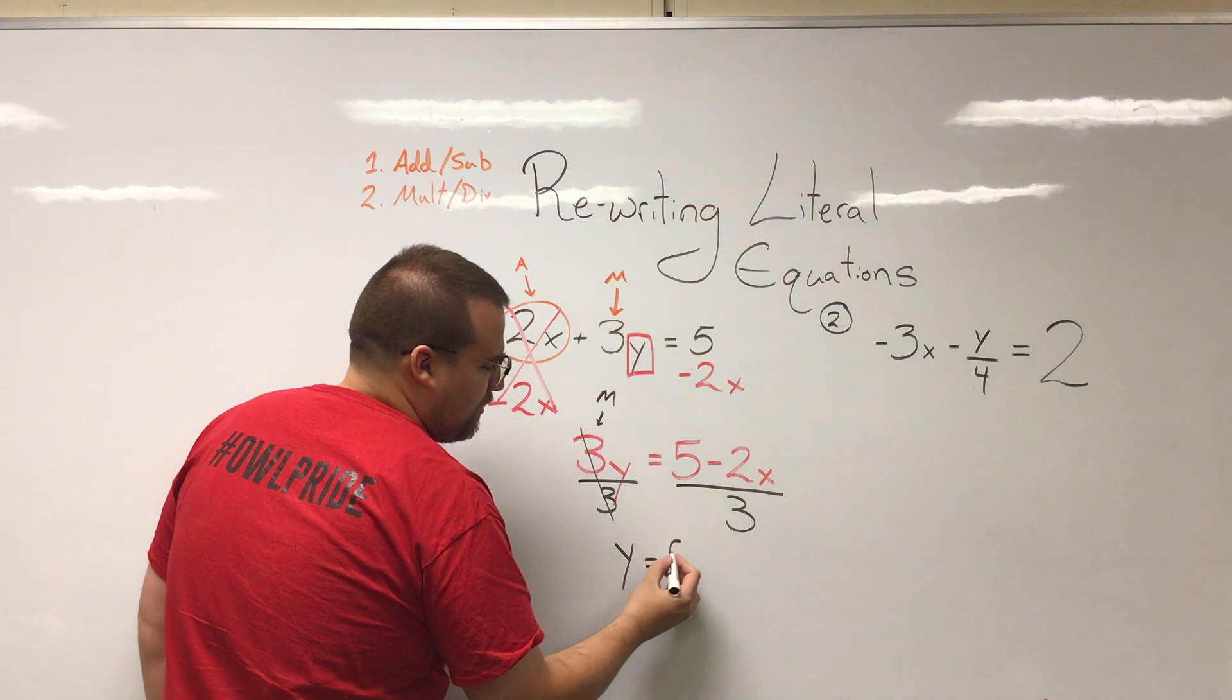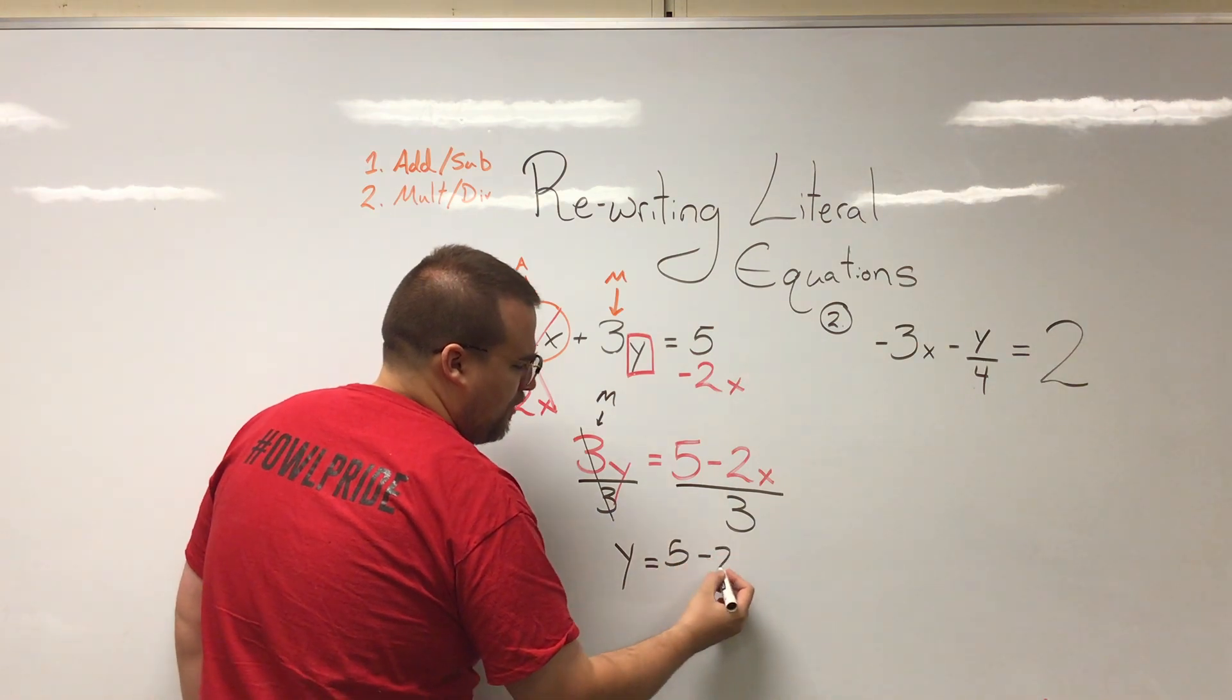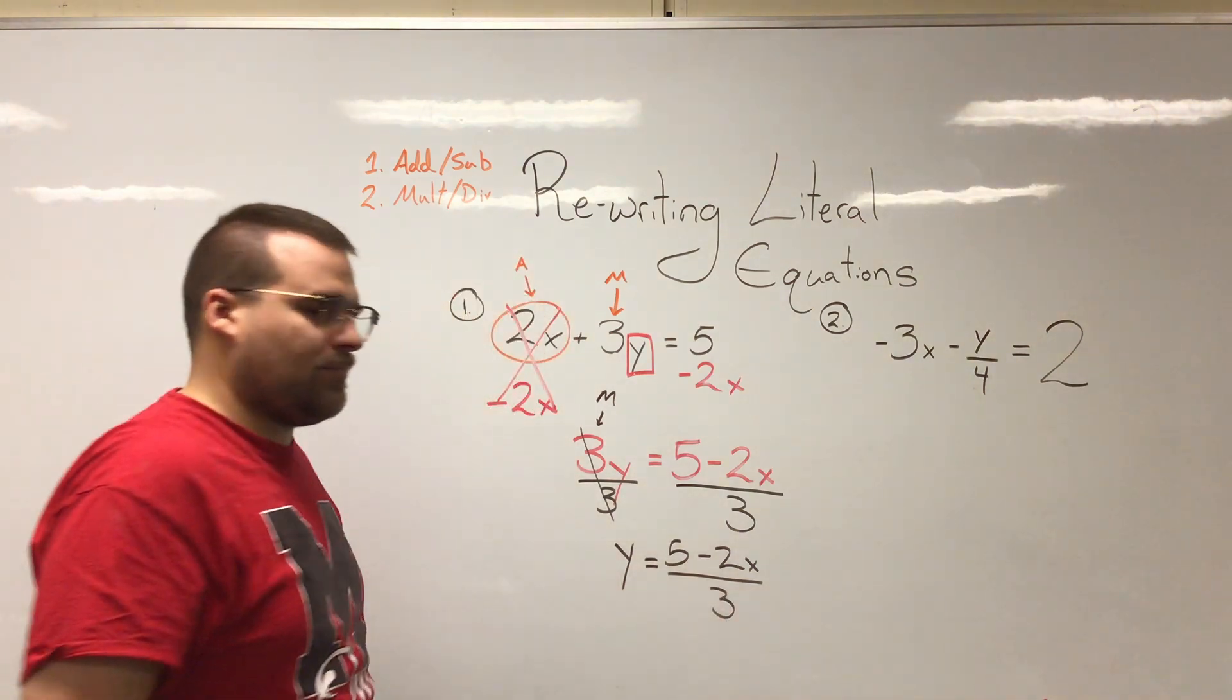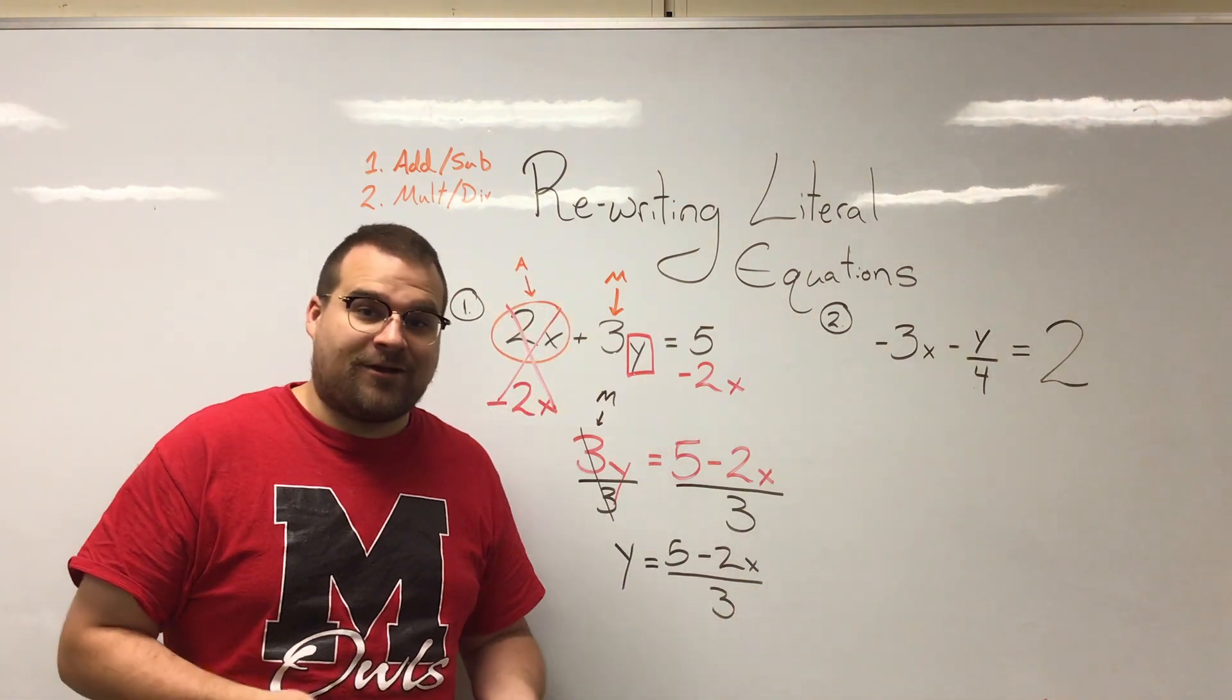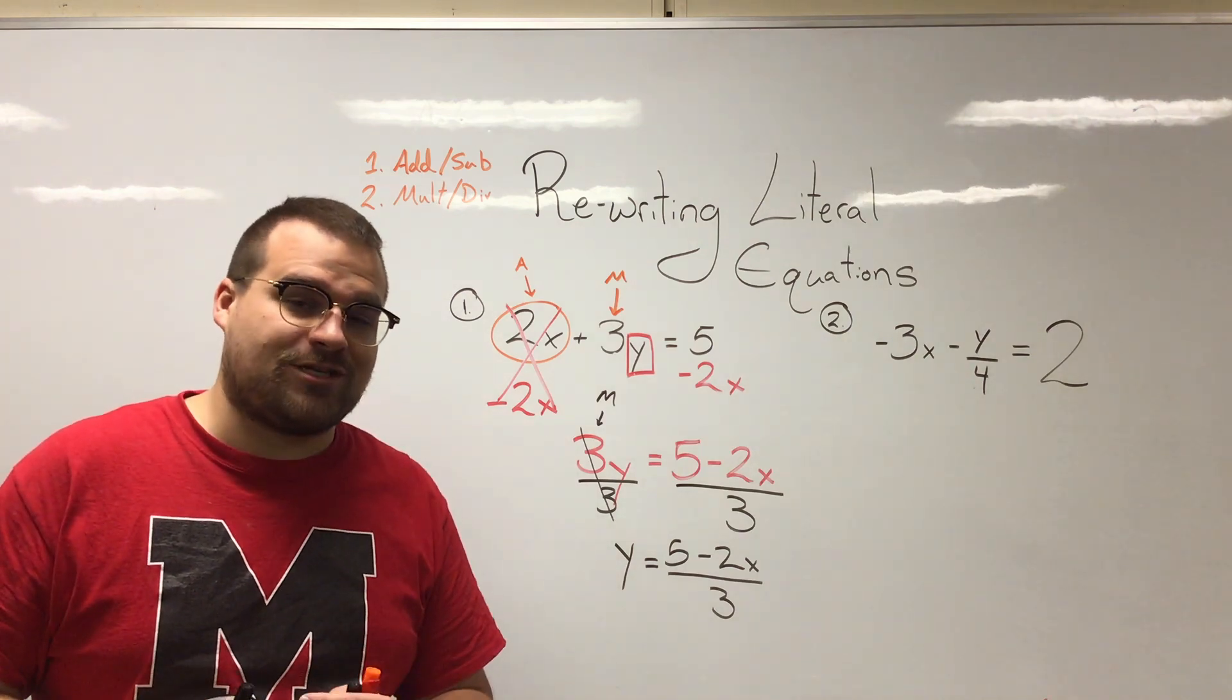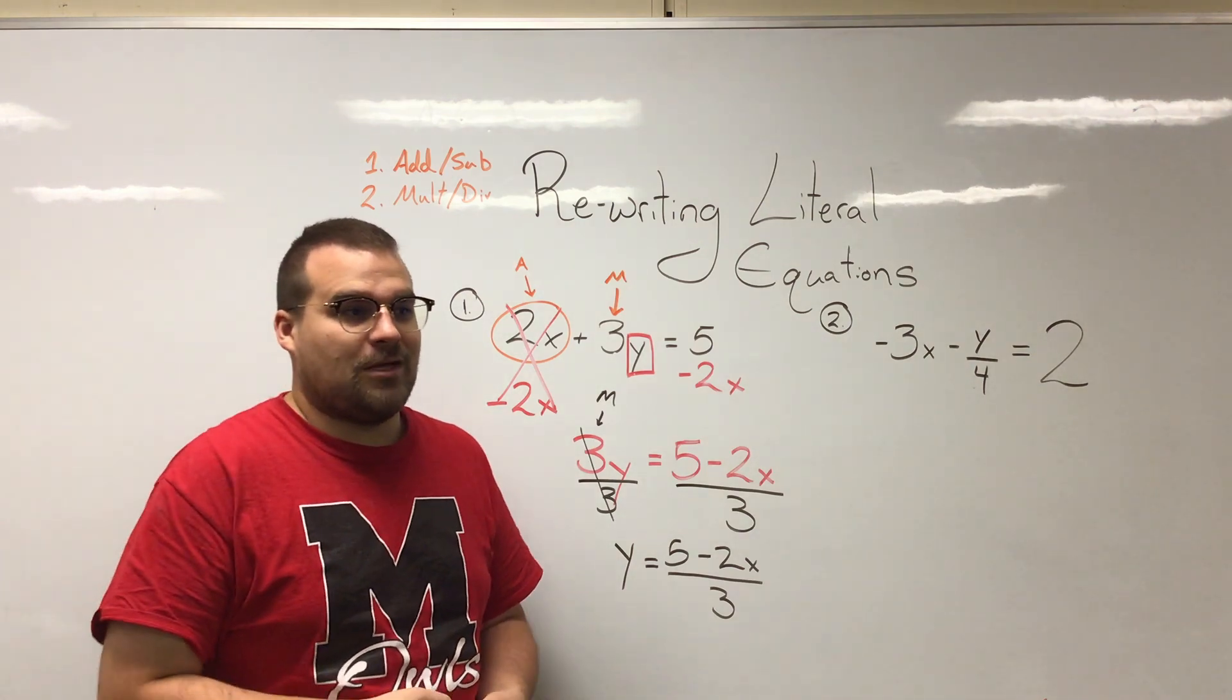And on this side of the equation we have 5 minus 2x over 3 and we're done. I know that's not what problems usually look like whenever we reach the end of them. Usually we say oh well x or y is 5 or 2 whatever it is.